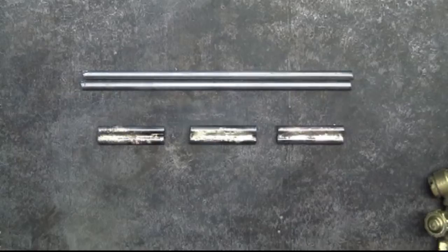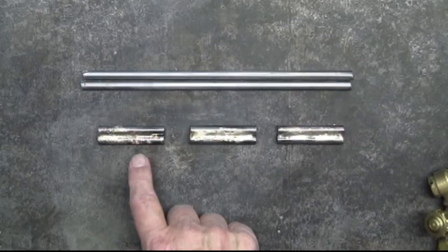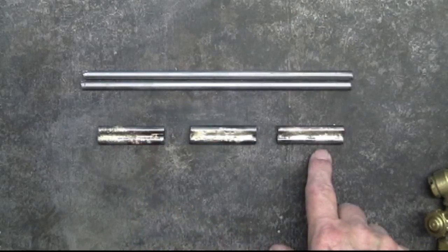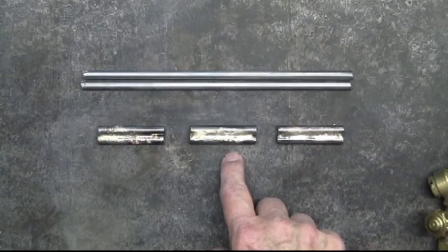To pick up where we left off last week, these are the three pieces of 5/16 inch that was braised. This piece was too hot, this piece was not hot enough, and the middle piece was just right.